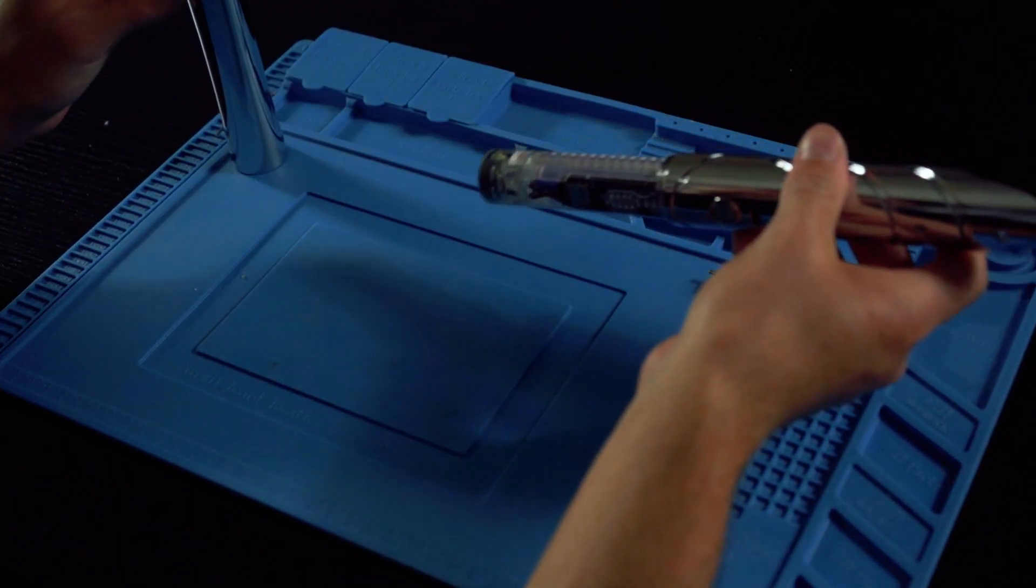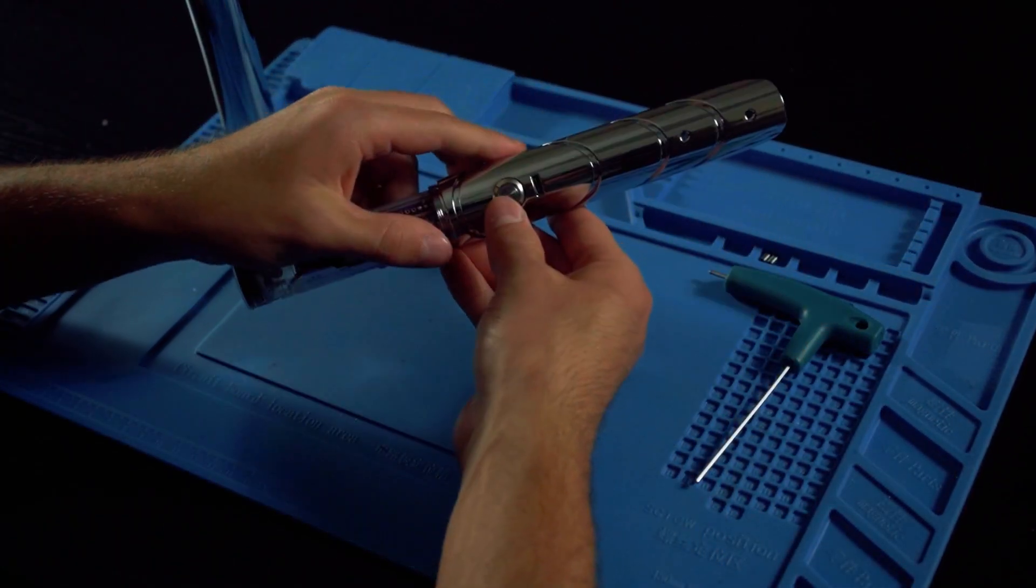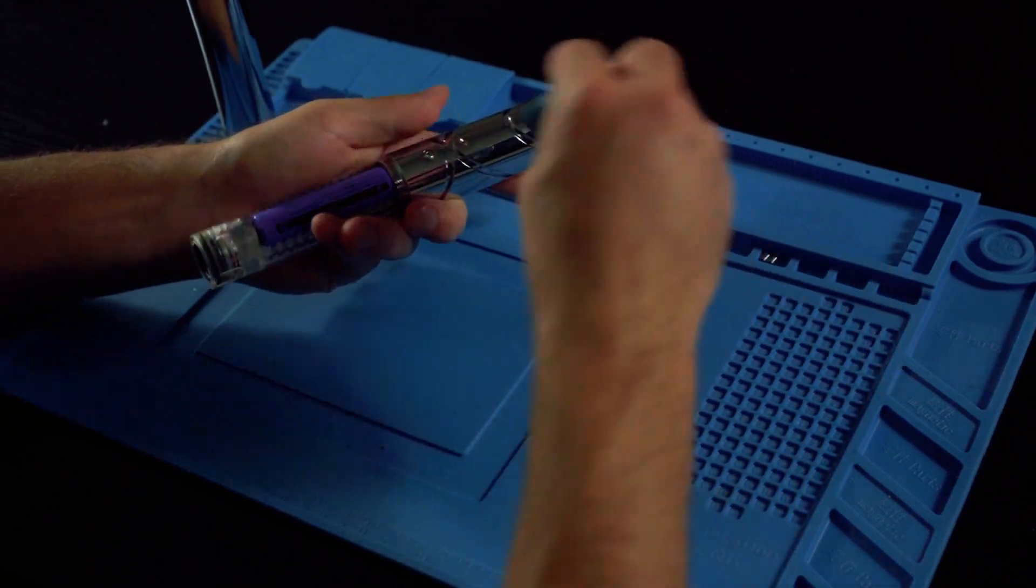Once we get that off, we're going to go ahead and move to the back of the hilt and unscrew both of the screws located right behind the button.